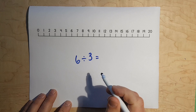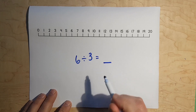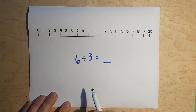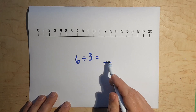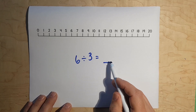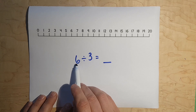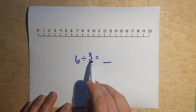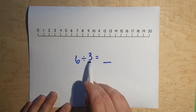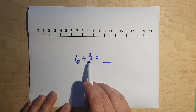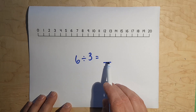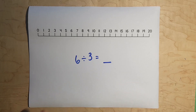What we want to find out is the answer, or the quotient. So, this is your dividend — that's the first number. This is your divisor — that's the second number. And this is your quotient, your answer.